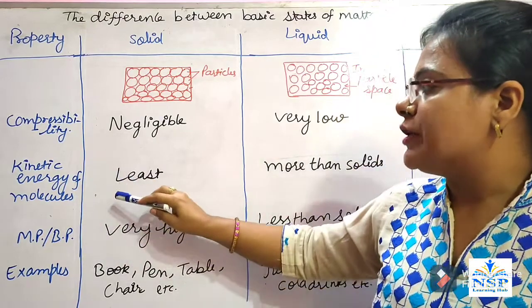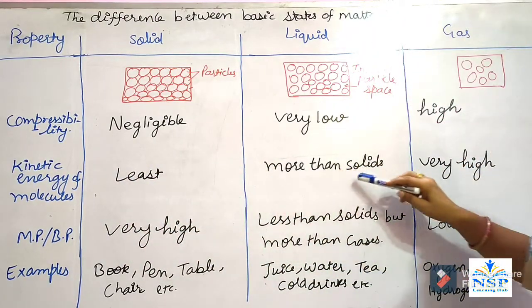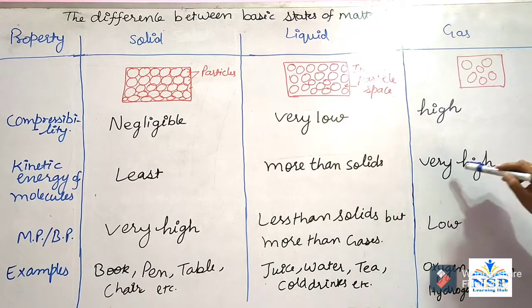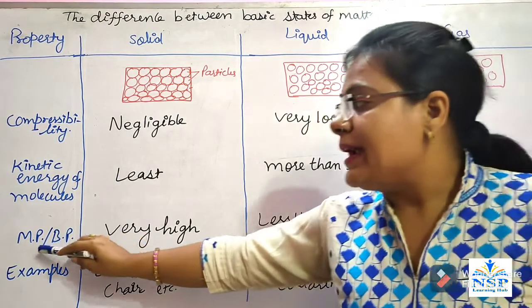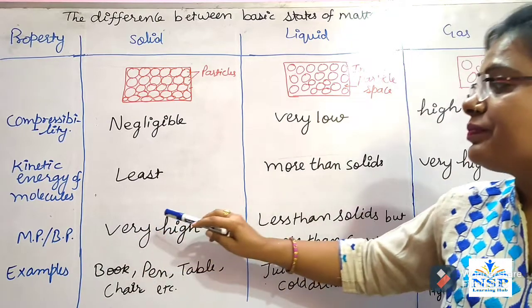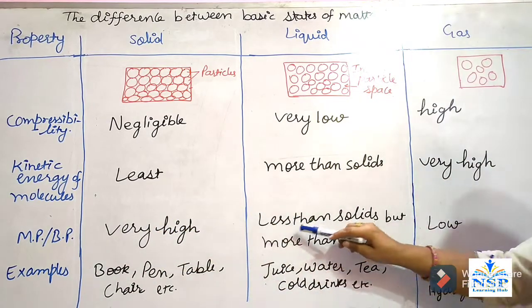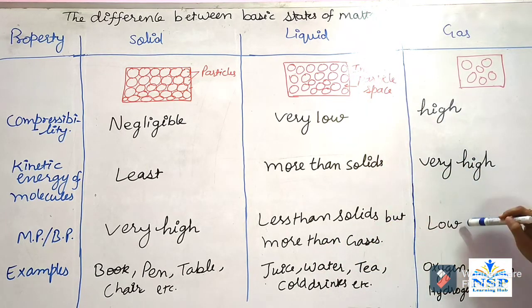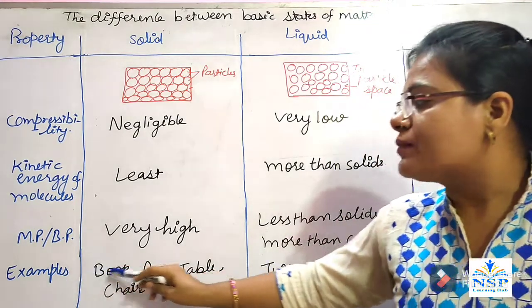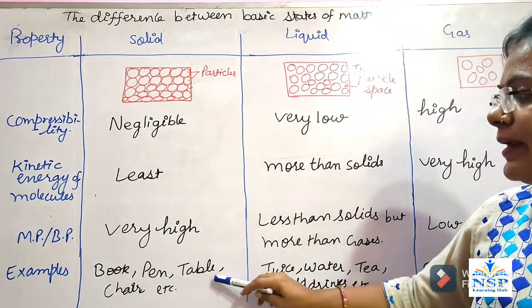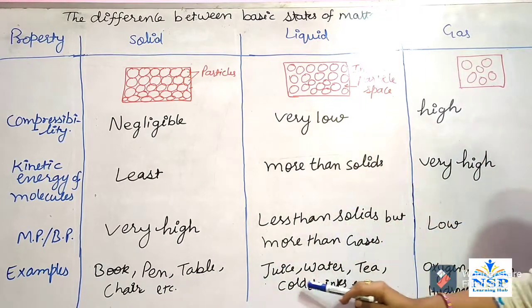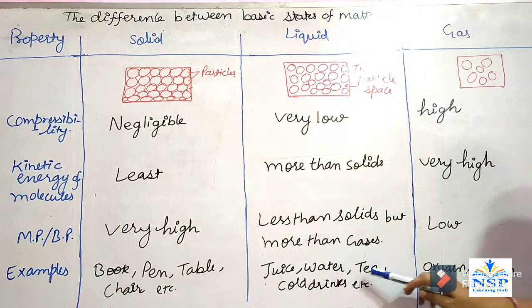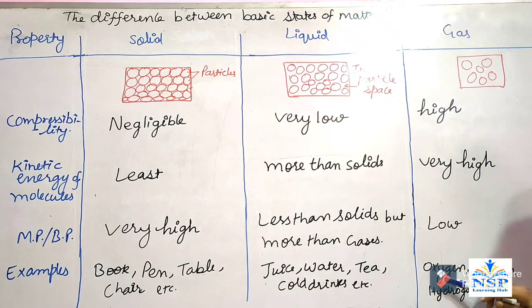Kinetic energy of molecules: least in solid state, more than solid in liquid, and very high in gaseous state. Melting point and boiling point: very high in solid state, less than solids but more than gases in liquid state, and very low in gaseous state. Examples of solids: book, pen, table, chair. Examples of liquids: juice, water, tea, cold drinks. Examples of gases: oxygen, nitrogen and hydrogen.